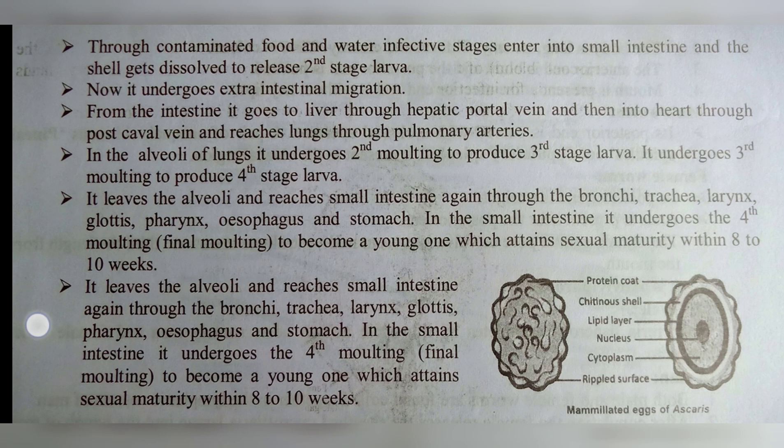The larvae leave the alveoli and reach the small intestine again through the bronchi, trachea, larynx, glottis, pharynx, esophagus, and stomach. In the small intestine, they undergo the fourth moulting to become young adults, which attain sexual maturity within 8 to 10 weeks.